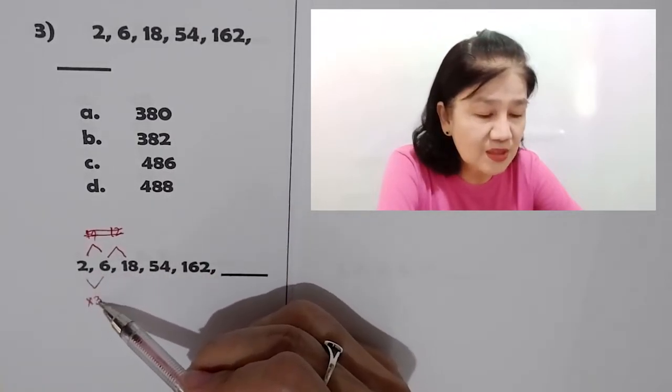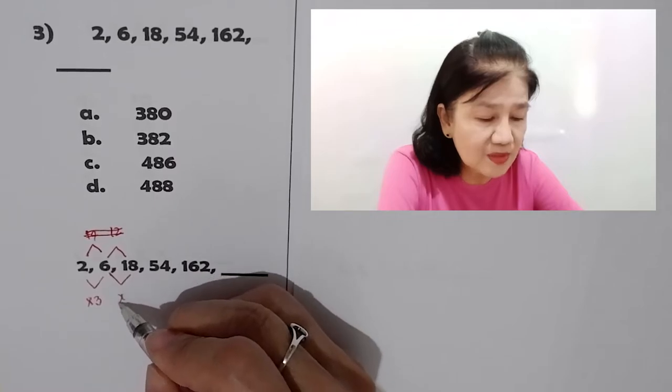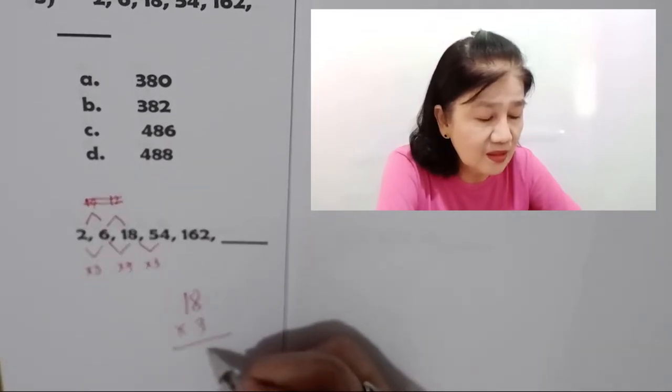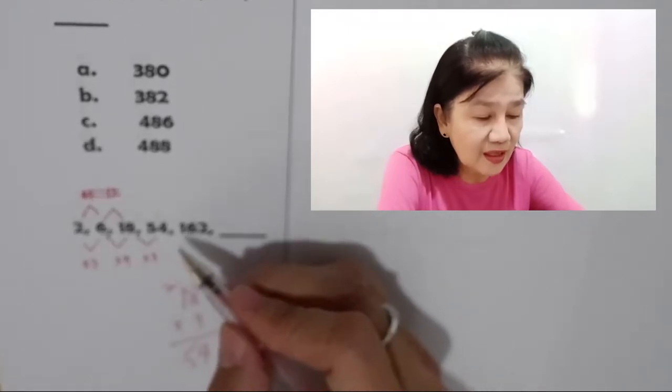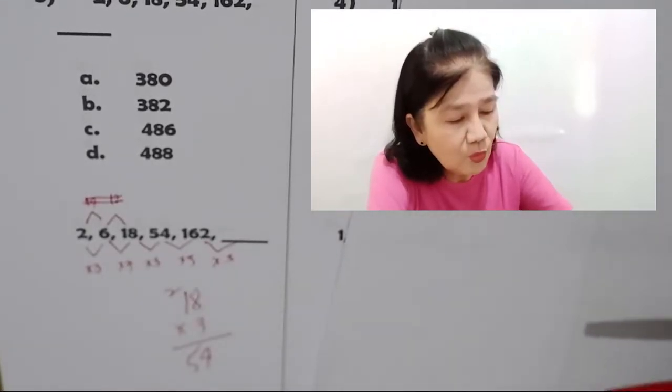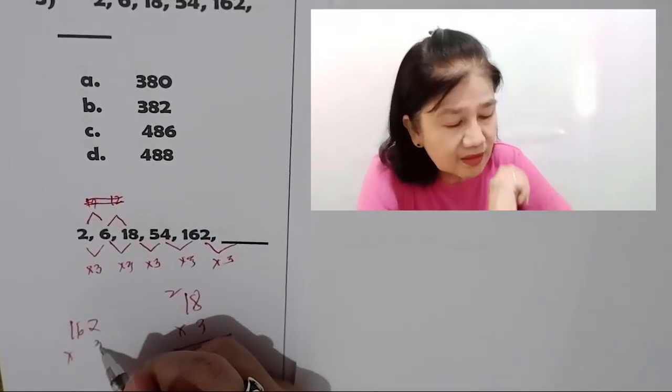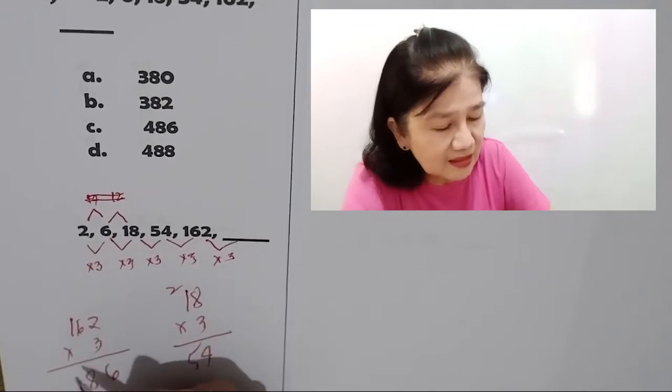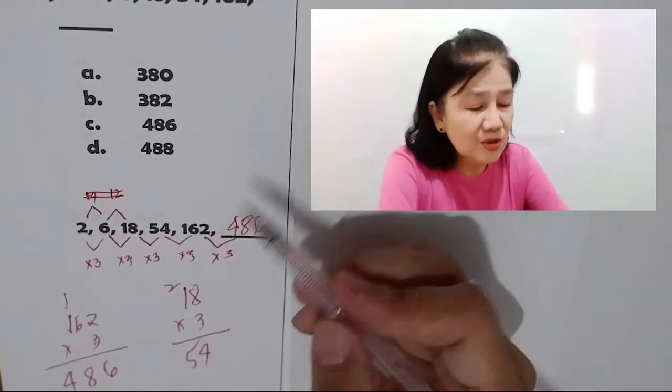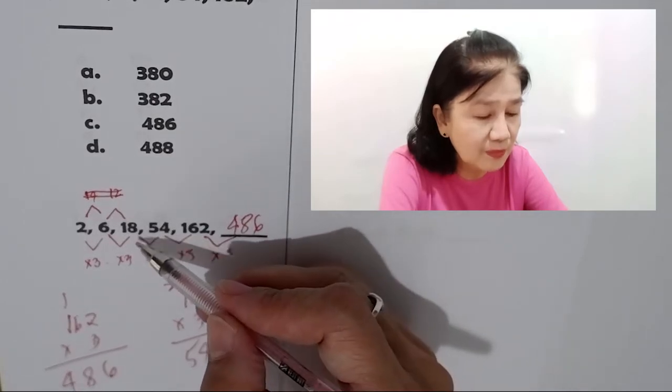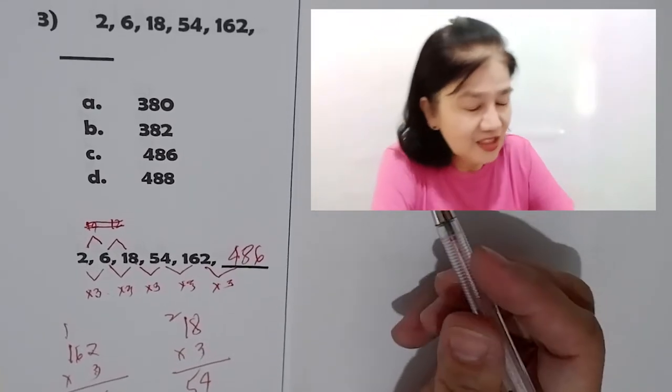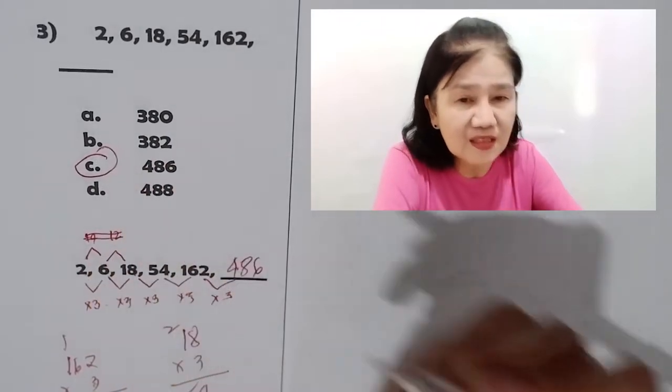So, you try times 3. 2 times 3 is 6. 6 times 3 is 18. Is 18 times 3 54? So, 18 times 3. 8 times 3, 24 carry 2. That's 54. Yeah. So this must be times 3. Then, just multiply this by 3. So, we have here 162 times 3. So, this is 6. 6 times 3 is 18. Carry 1. 3 times 1, 3 plus 1 is 4. 486. Yeah. So, you don't really have to continue this. As you can see, after multiplying 18 times 3 is 54, I move on to 162 times 3 because you are under time pressure. So, the correct answer is letter C for 486.